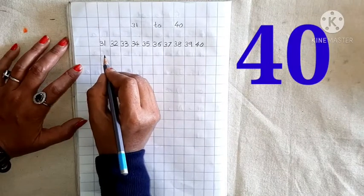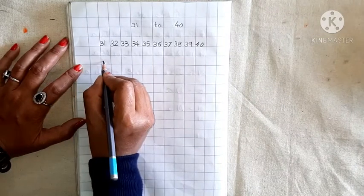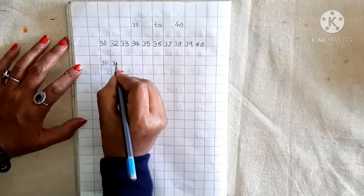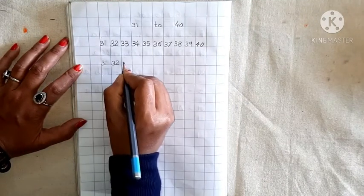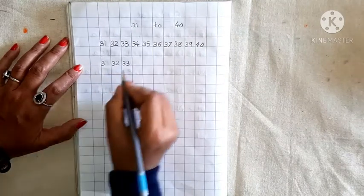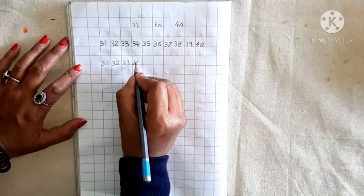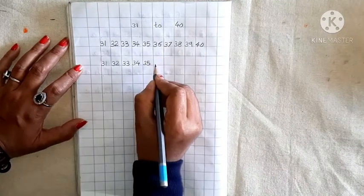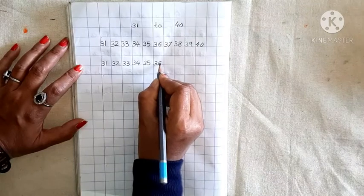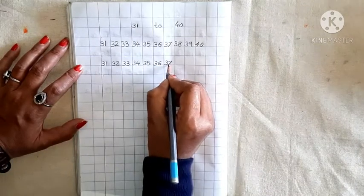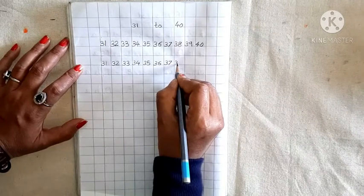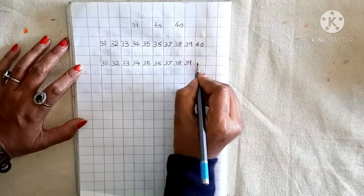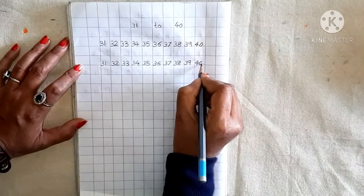Then again. Leave one box and write here. 3, 1, 31. 3, 2, 32. 3, 3, 33. 3, 4, 34. 3, 5, 35. 3, 6, 36. 3, 7, 37. 3, 8, 38. 3, 9, 39. And 4, 0, 40.